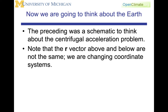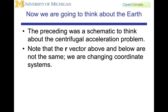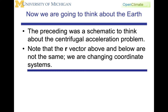Now we're going to think about the Earth. The preceding was a schematic to get comfortable with a rotating coordinate system and introduce the centrifugal acceleration. We used a rotating coordinate system with radius r, and we are now going to move into a similar coordinate system anchored in the realities of a spherical Earth model. Therefore the r vector here is different from the r vector we used before as we move into the Earth's coordinate system.